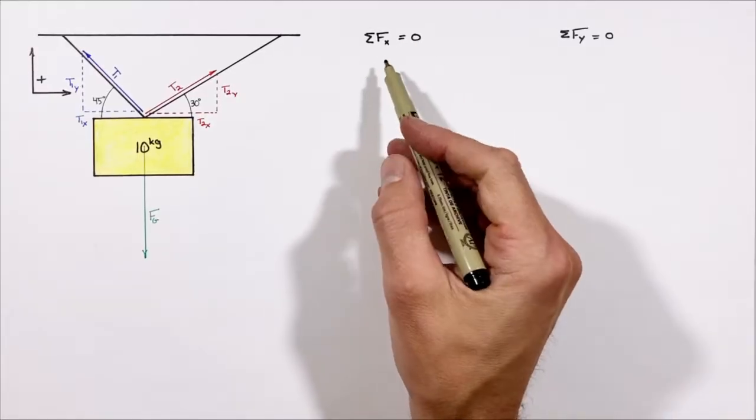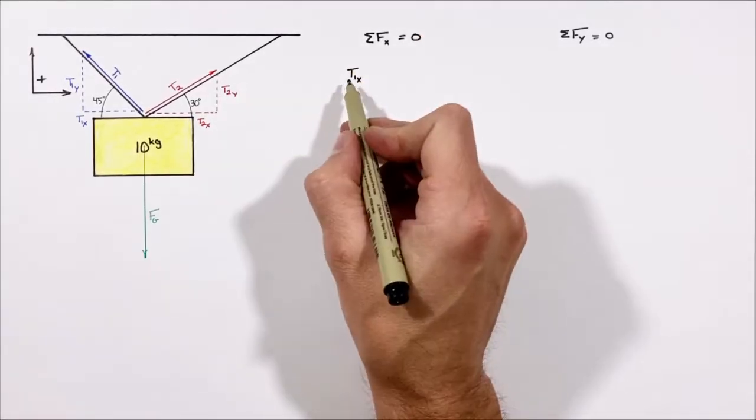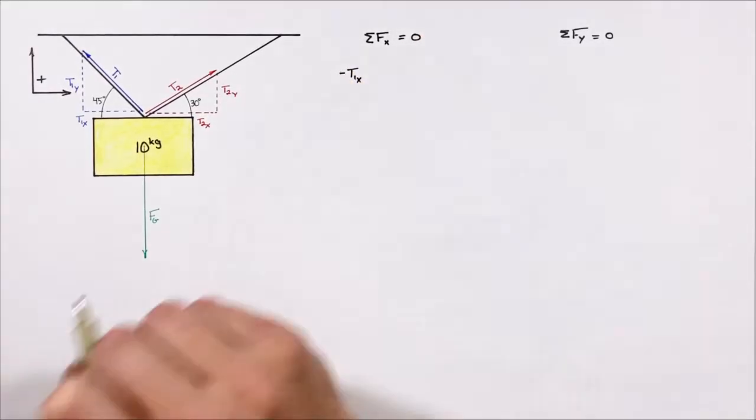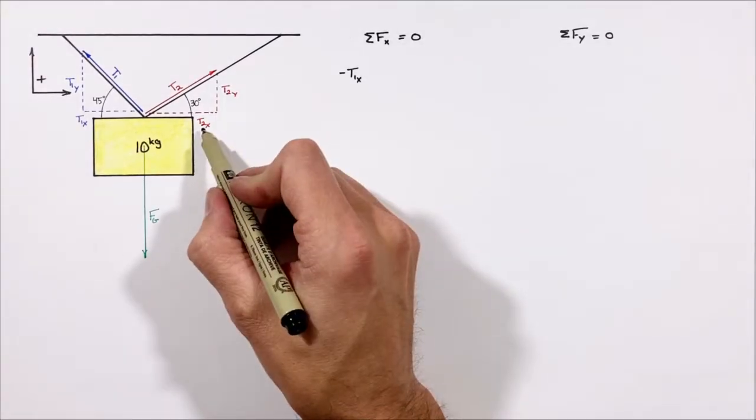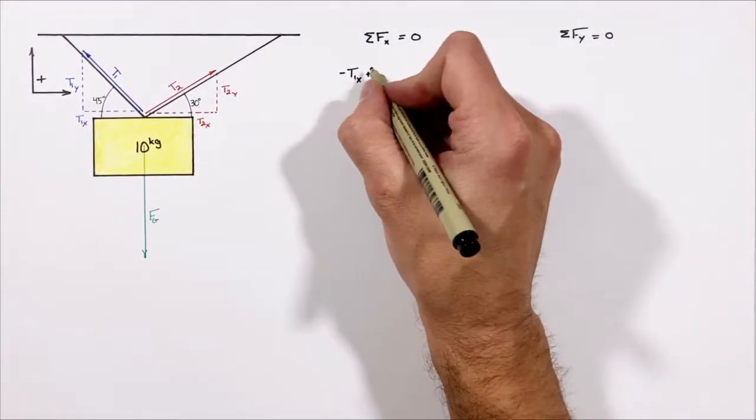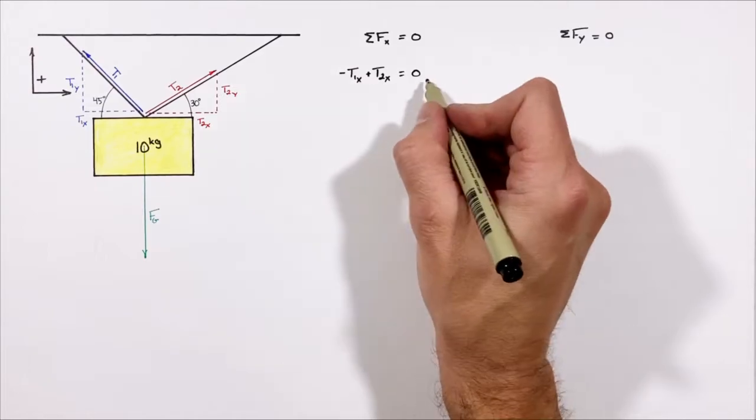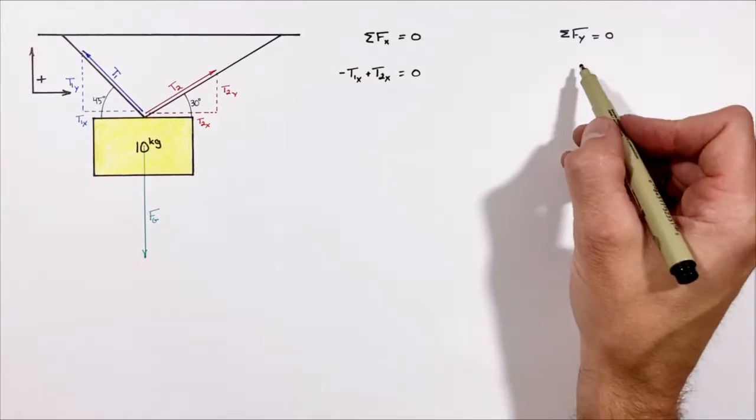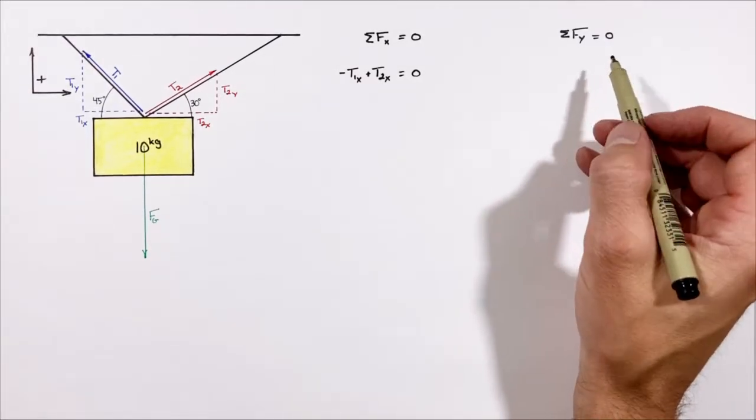In actually applying these forces to Newton's second law, we'll see t1x is acting to the left so it's negative, t2x is acting to the right so it's going to be positive, and those two forces need to add up to zero.